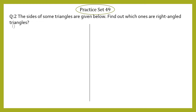Sub-question 1: sides are 8, 15, 17. We are given the lengths of sides of a triangle and we need to check whether these lengths belong to a right angle triangle or not. To check this, we will verify whether this group of three numbers is a Pythagorean triplet or not.